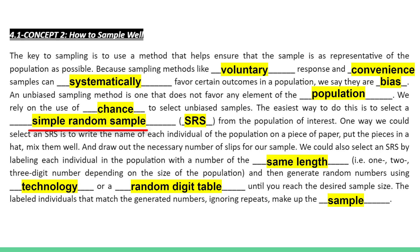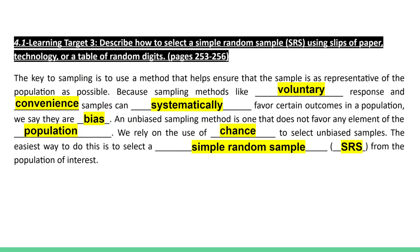This is going to be the easiest if we just take a simple random sample — this is when each possible sample of a certain size is equally likely to be selected. For learning target number three, we want to describe how to select a simple random sample. We use this sampling strategy so much, we abbreviate it as an SRS, simple random sample. We can use that abbreviation on our AP exams, too. The big idea is that it's random, so to help reduce — not eliminate, but at least help reduce — bias, we involve chance in our sampling.